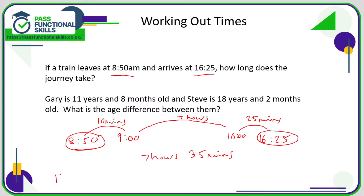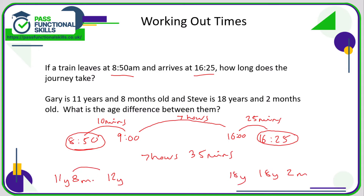Let's have a look at another example. Gary is 11 years and 8 months — I'm going to write 11y 8m — and Steve is 18 years and 2 months. Again, I'm just looking for a full number of years between these two values. So from 11 years and 8 months, the next full year up is 12 years, and the next full year down from 18 years and 2 months is 18 years.